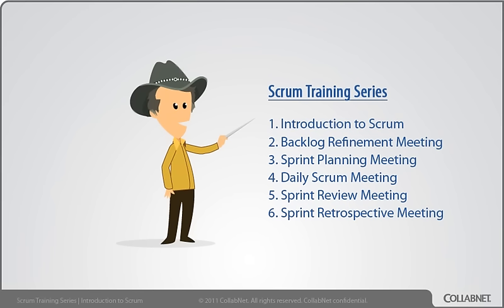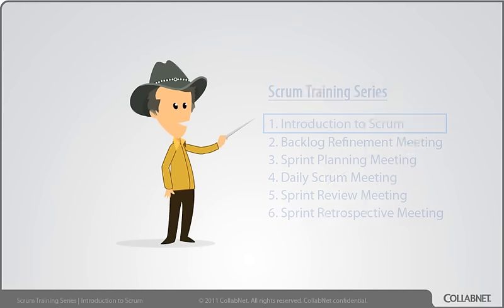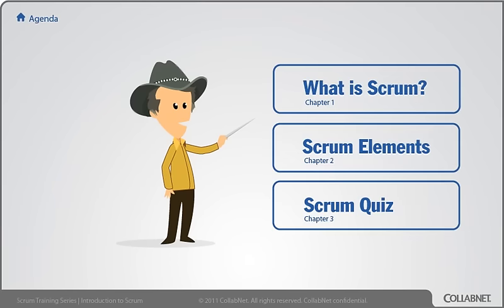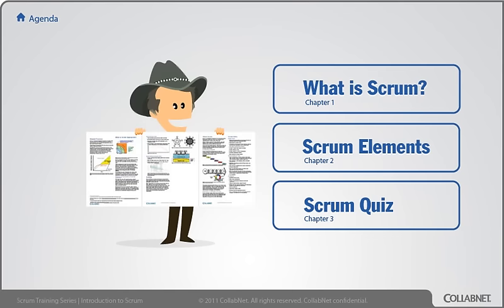Welcome to Module 1 of CollabNet's Scrum Training Series: Introduction to Scrum. This is a brief introduction to topics that are covered in greater depth in the other modules. I'm Michael James. I help organizations do Scrum and related agile practices. This module is subdivided into three chapters. I also recommend downloading the six-page illustrated Scrum reference card.